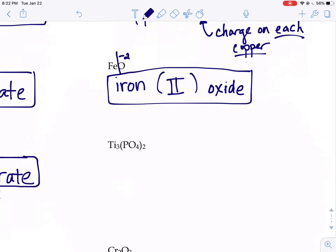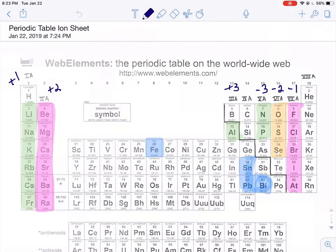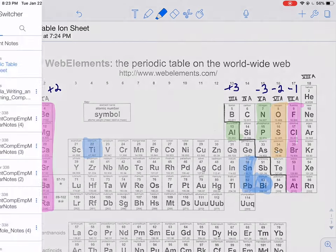Try one more of those Roman numeral ones. They're a little tricky. Ti3(PO4)2. Ti. Okay. Hmm. That's not a common symbol. I haven't seen that one much. You're right. You haven't. Ti is right here. Titanium. So we'll write titanium.